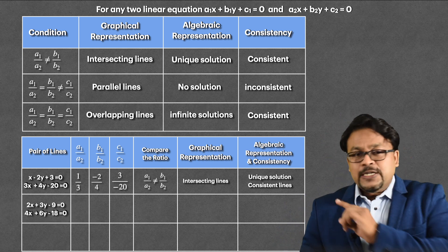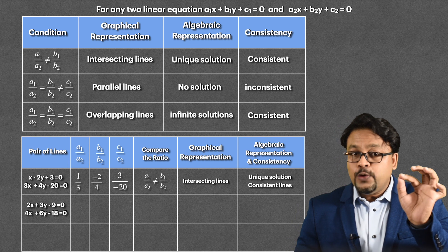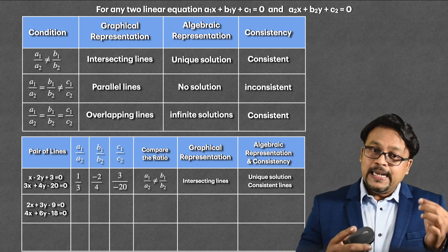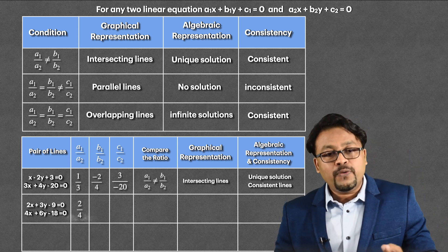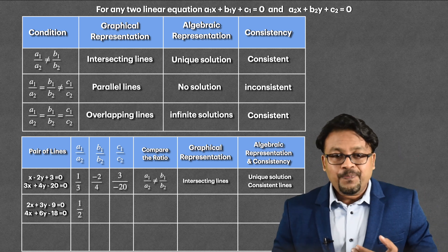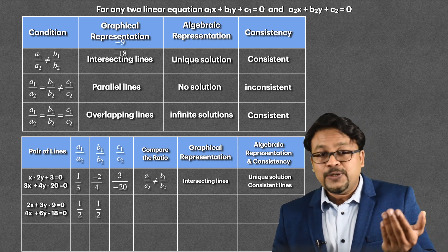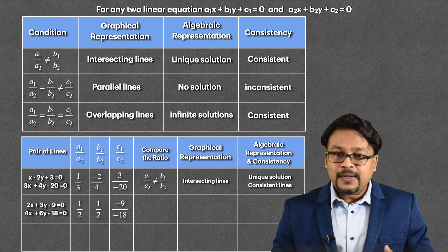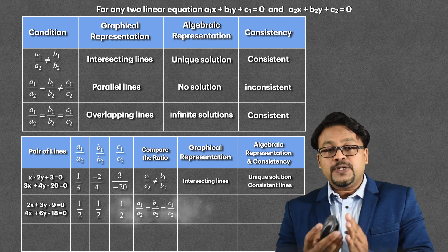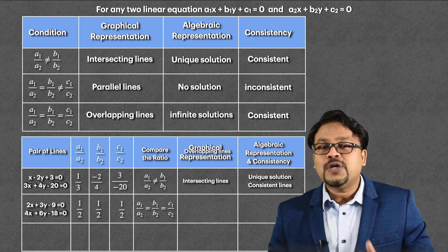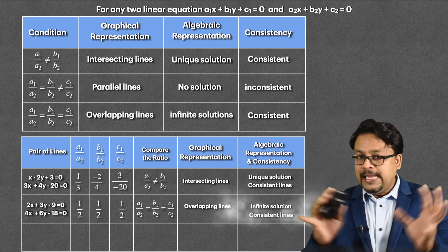Second example: 2x plus 3y minus 9 equal to 0, and 4x plus 6y minus 18 equal to 0. Here a1 = 2, b1 = 3, c1 = minus 9, and a2 = 4, b2 = 6, c2 = minus 18. So a1/a2 = 2/4 = 1/2. b1/b2 = 3/6 = 1/2. c1/c2 = minus 9 upon minus 18: the negatives cancel and we get 9/18 = 1/2. All three ratios a1/a2, b1/b2, c1/c2 are equal to 1/2. Whenever this happens, the lines are overlapping or coincident, so they have infinitely many solutions and the lines are consistent.